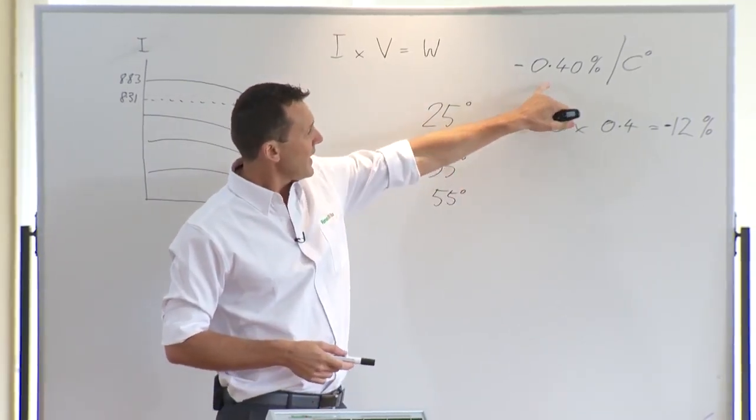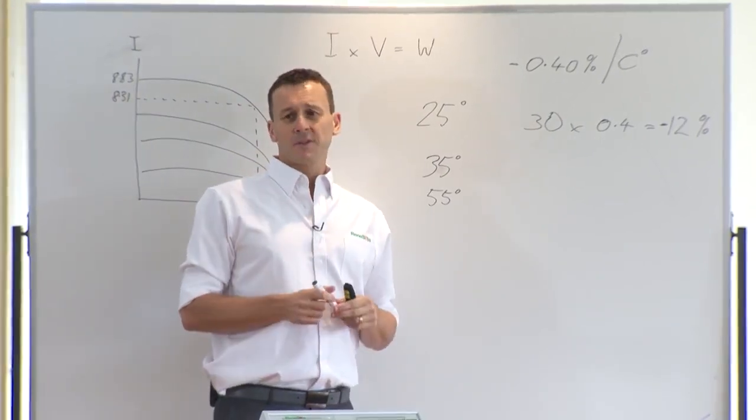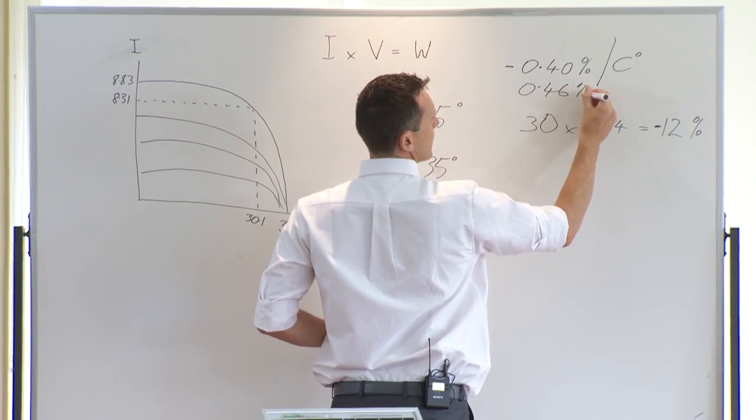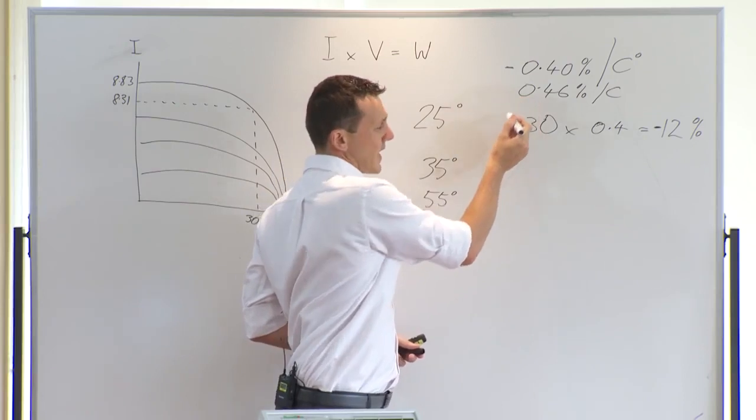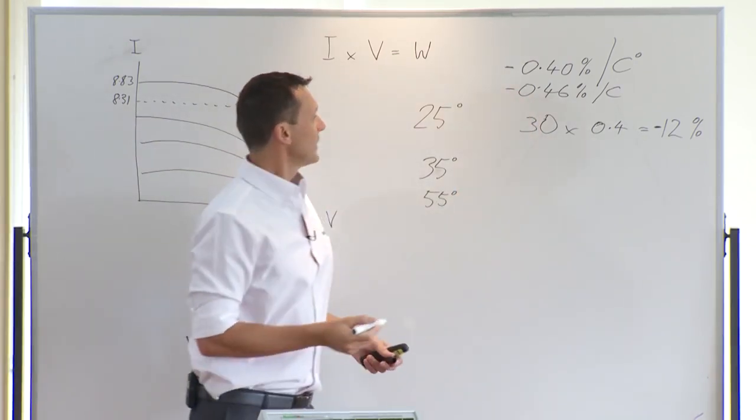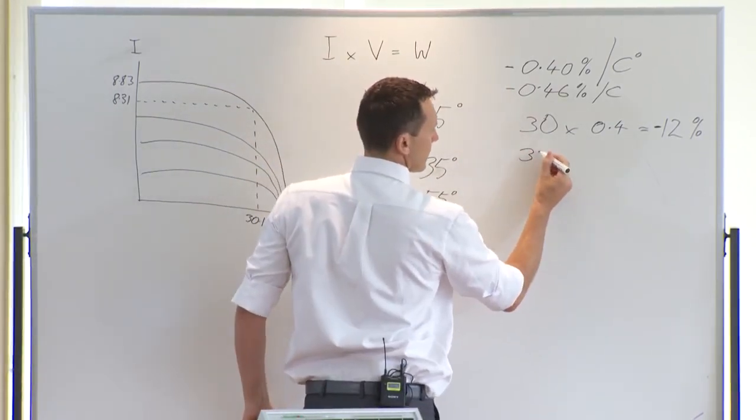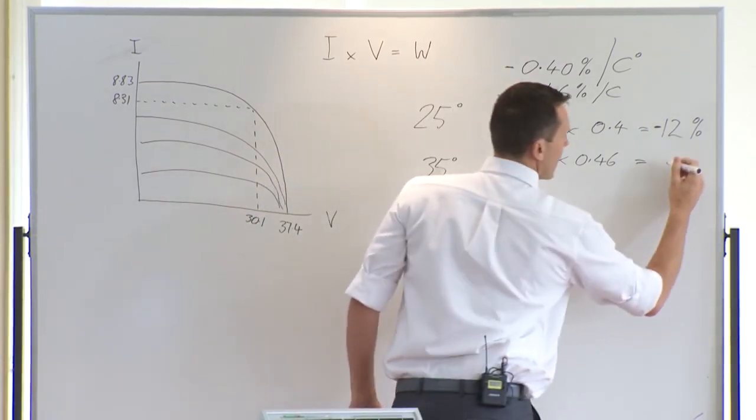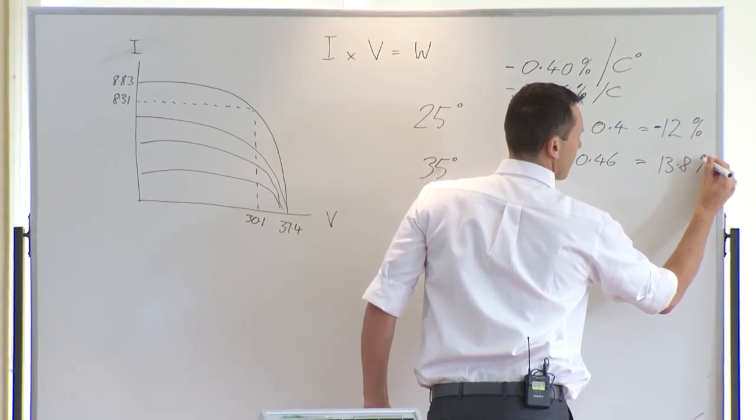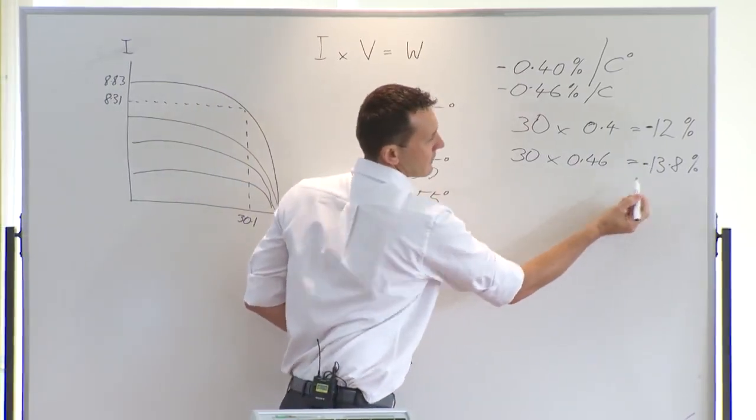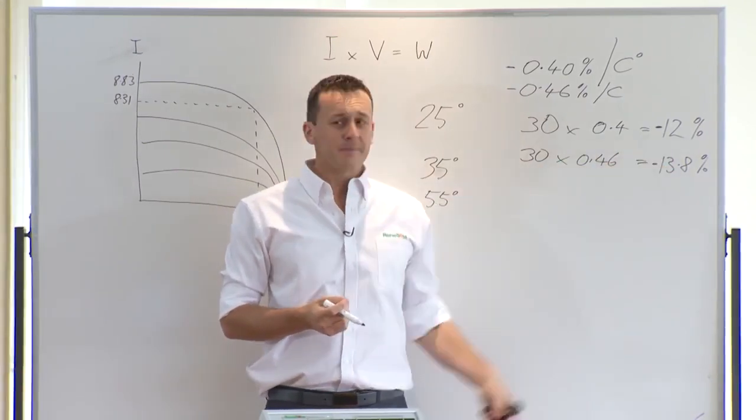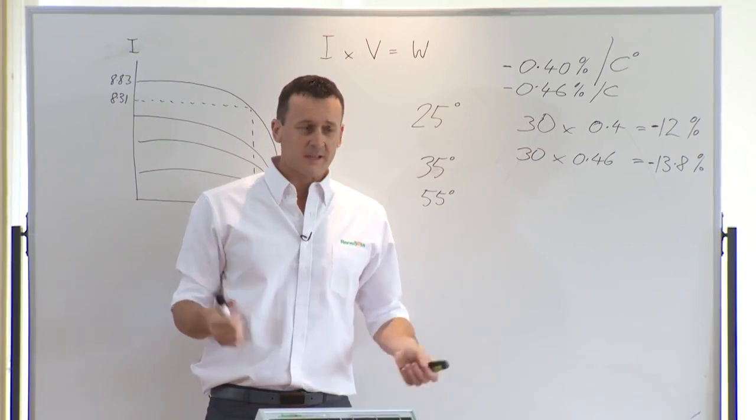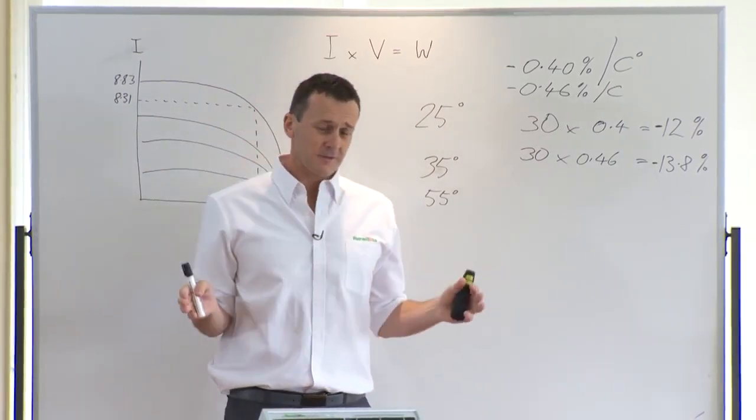So if we do a comparison of, say, another brand of module that may have a temperature coefficient of 0.46% per degree Celsius, and again that's not uncommon, that's fairly standard for a monocrystalline panel on the market. Under these same conditions, if we do that 30 degree temperature change times 0.46, 13.8. So as you can see, that loss of that particular module under the same conditions is 1.8% more than this module with this temperature coefficient. So that 1.8% over a lot of hot days, over a lot of years, will mean a significant difference in your total yield for the system performance.